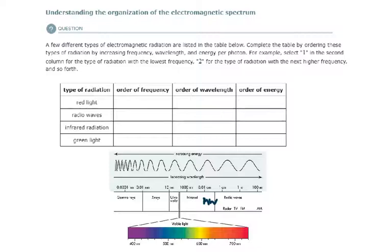And so when we look here, they want us to rate these types of radiation by order of frequency, order of wavelength, and order of energy. So nu represents frequency, lambda wavelength, and capital E for energy.